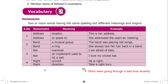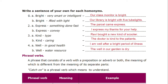Write a sentence of your own for each homophone. First: 'bright'. Bright means very smart or intelligent — 'Our class monitor is bright.' Bright also means filled with light — 'Our library is bright with five tube lights.'